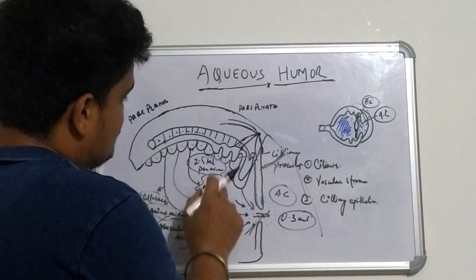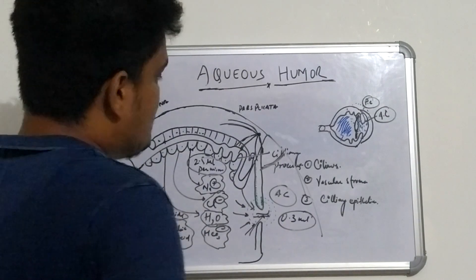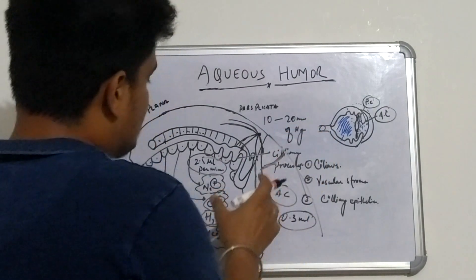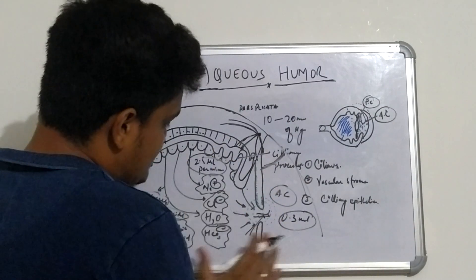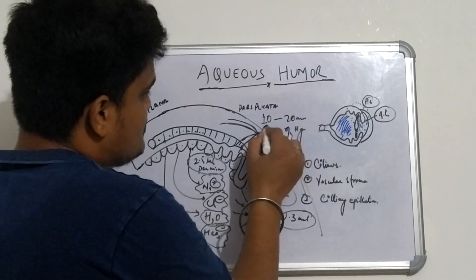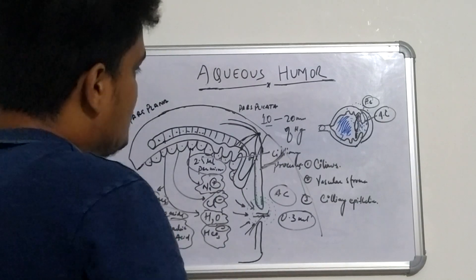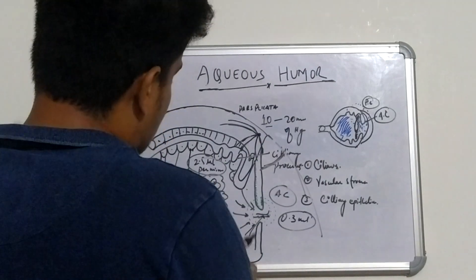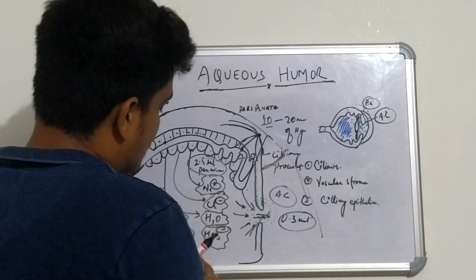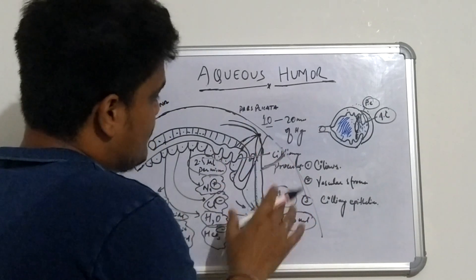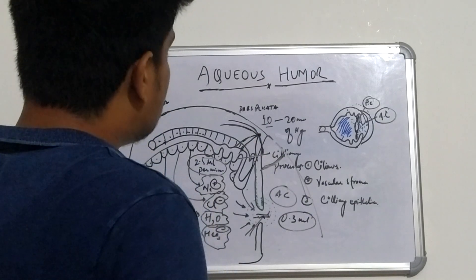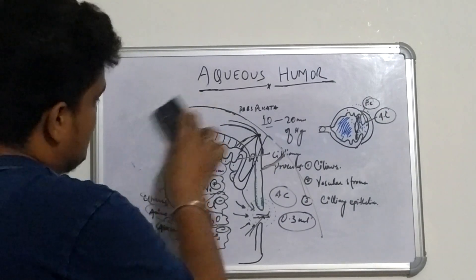Any disturbance in this production-flow pathway leads to an increase in intraocular pressure. Normal intraocular pressure is 10 to 20 mmHg, with a typical value around 15 to 16 mmHg. A raised intraocular pressure is one of the major risk factors for glaucoma. This concludes the discussion on aqueous humor production; in the next session we will discuss circulation and drainage. Thank you.